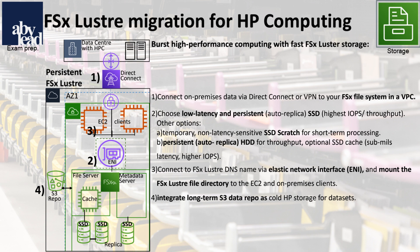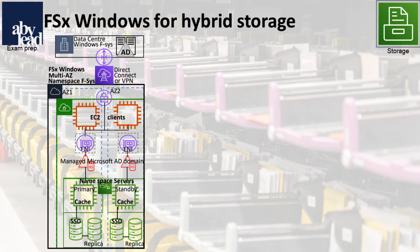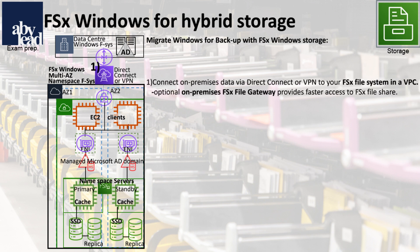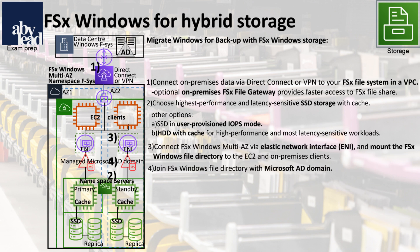With FSx Windows, you migrate on-premises Windows Server file access and features such as Active Directory, offloading workloads to the cloud or implementing a backup. Connect your on-premises data via Direct Connect to your FSx file system, and with the optional on-premises FSx file gateway you get an even faster FSx file share. Then select SSD for highest performance and latency sensitivity, and multi-AZ for high availability. Finally, join the FSx Windows file directory with the Microsoft AD domain.